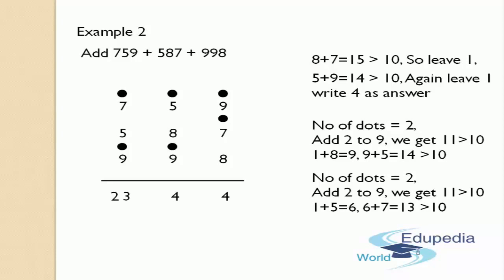So this is the most easiest way in the world that is stated in Vedic Mathematics, with the help of the method called Bindavankana. Bindavankana means it's a dot — Bindu means dot. So by using the dots, we have solved this example, that is addition of numbers.